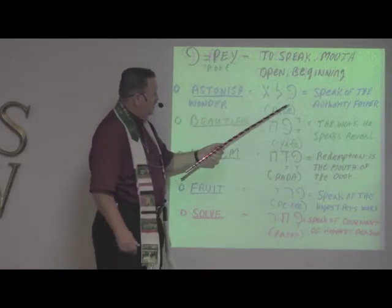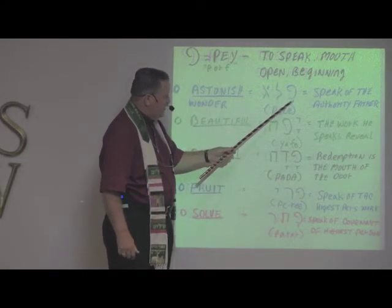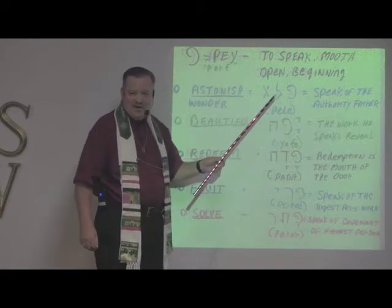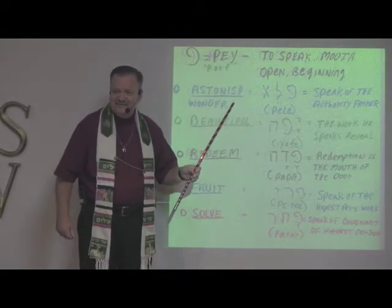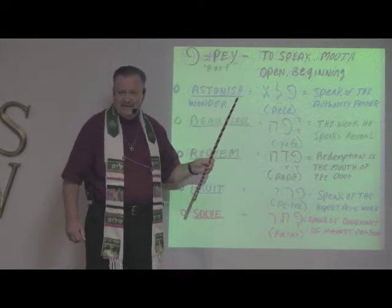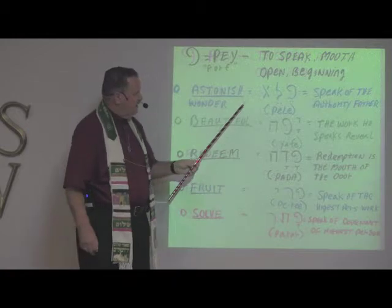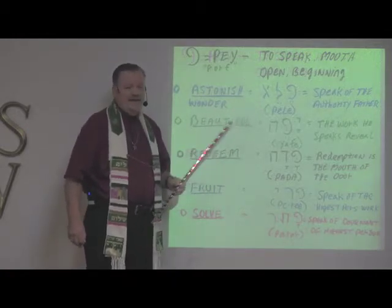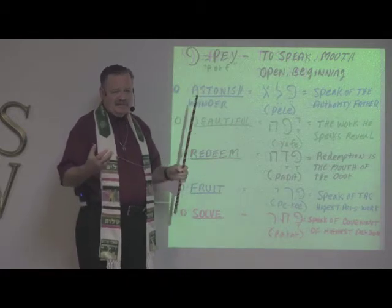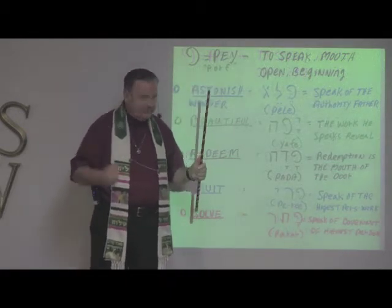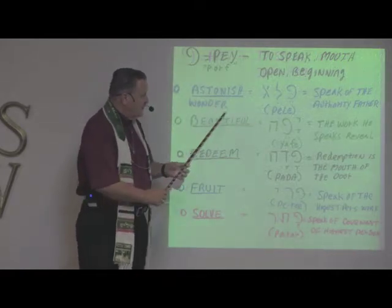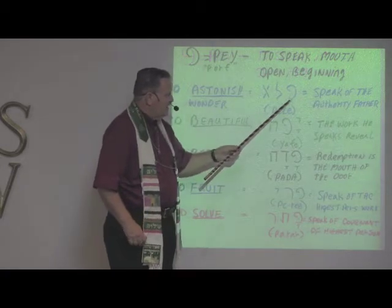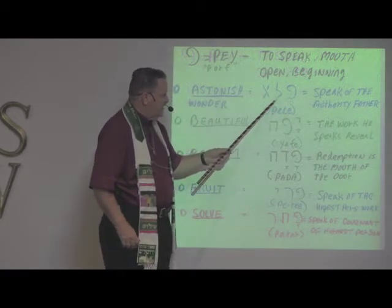So we have here the letter Peh, which has the P sound. Then we have the letter Lamed — and Hebrew scholars, what does Lamed mean? Authority. And then we have Aleph, which is the first letter in the Hebrew alphabet. The word picture there is an ox, but we understand it means the strong one, the father. So if you put those three concepts together, what do you get? To speak of the authority of the father.